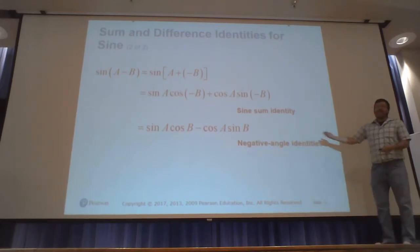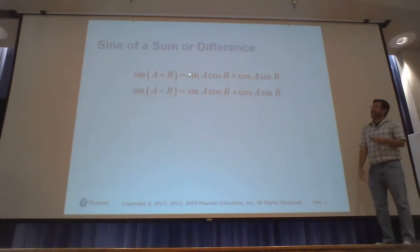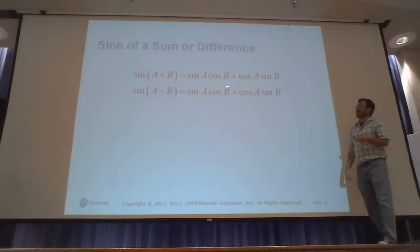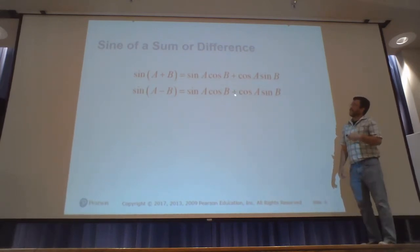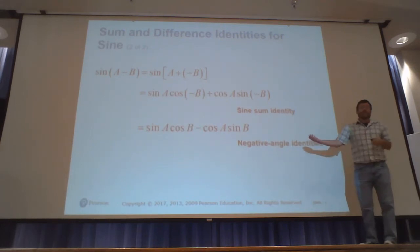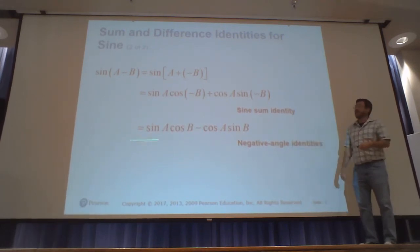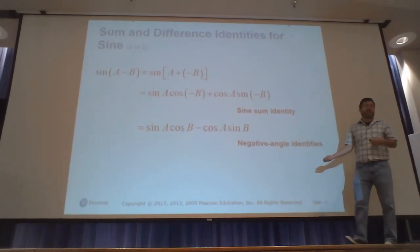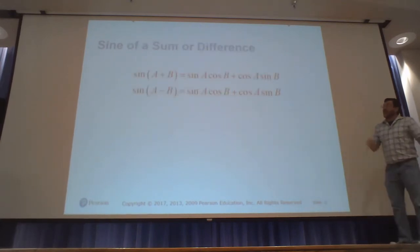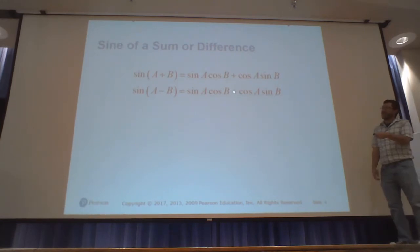Make sure to write sine A cosine B first, then cosine A sine B second. For the sum identity, order doesn't technically matter since we're adding, but for the difference identity the order matters. If you write it consistently the same way every time, that's the safest approach.